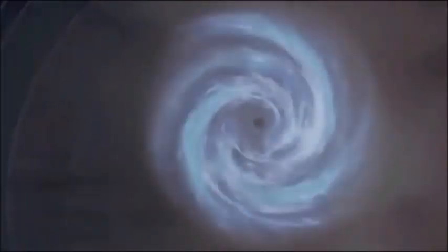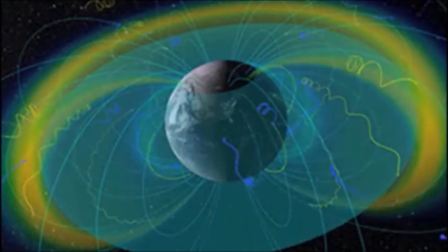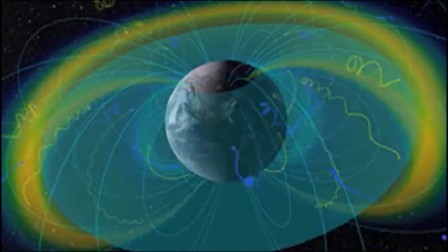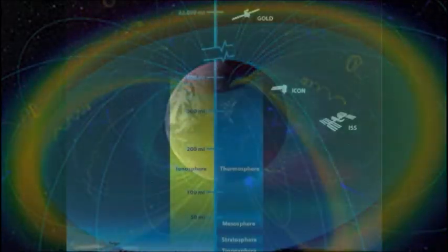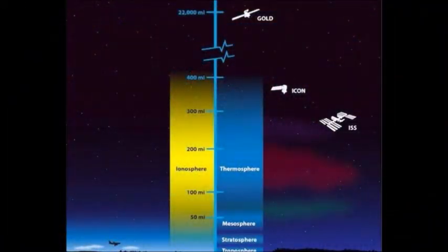Magnetic portals: the X points have recently been discovered by NASA. These points are typically found tens of thousands of kilometers from Earth, above the medium Earth orbit (MEO), in geostationary orbit (GSO), and predominantly in high Earth orbit.